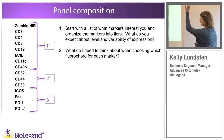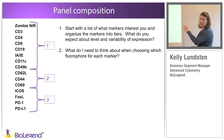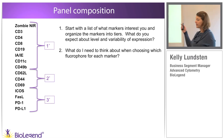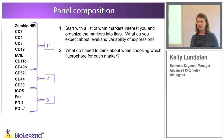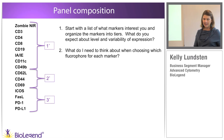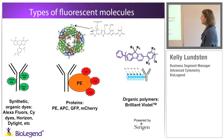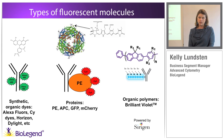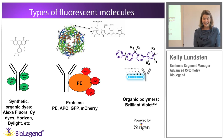Once I have the markers organized in my mind, I can start thinking about matching fluorophores to them. At 15 colors, I'm very close to maxing out all potential options, so how I analyze them becomes extremely important. I need to first consider the personality of each fluorophore — they're all very different, very special, and all have their own weaknesses.